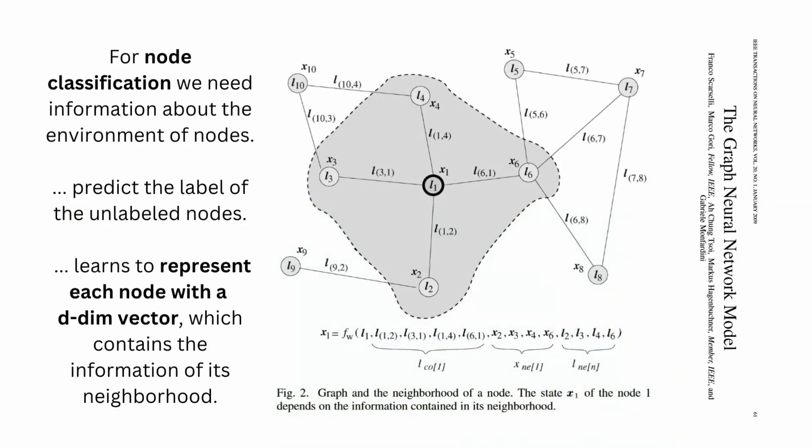If you look at the next slide, you can see a node — a middle node L1 — and the other nodes L2, L3, L4, and L6. You have the definition of the neighborhood of a node. For node classification, we need information about the environment of nodes to predict the label of unlabeled nodes. The model learns to represent each node with a D-dimensional, lower-dimensional vector which contains the information of its neighborhood.